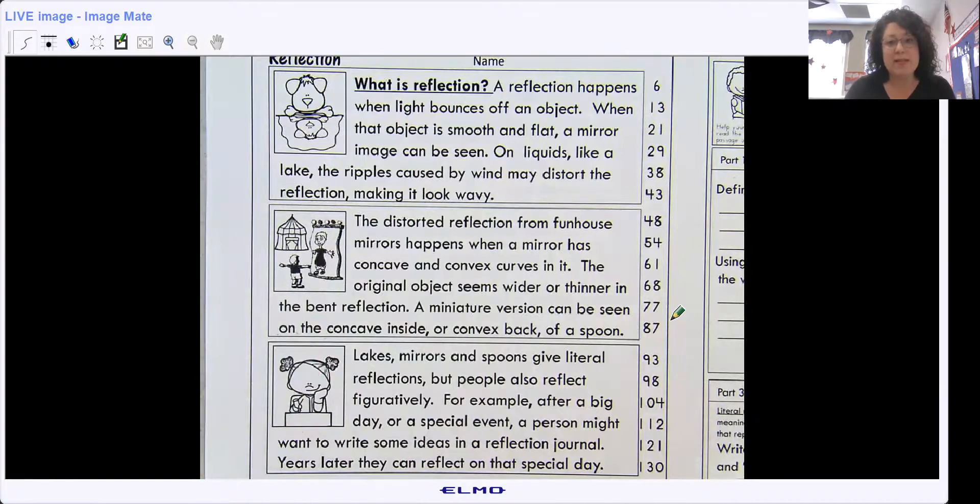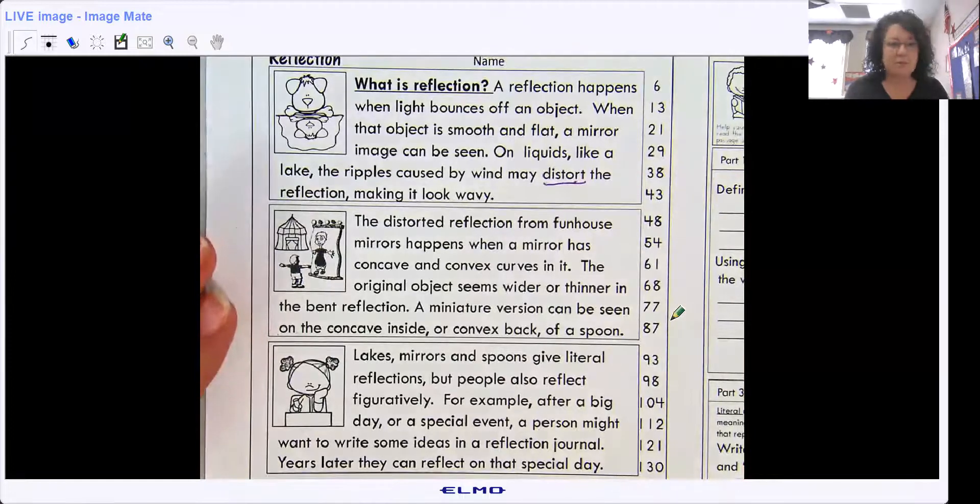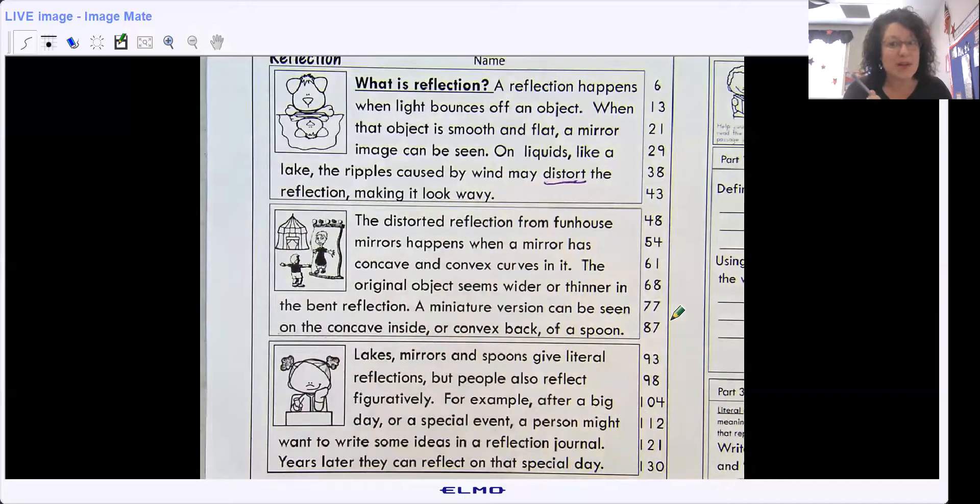a mirror image can be seen on liquids like a lake, the ripples caused by the wind may distort the reflection, making it look wavy. So I want you to underline the word distort because that's one of your questions. You're going to need to figure out what that means using your context clues and I know you know how to do that.